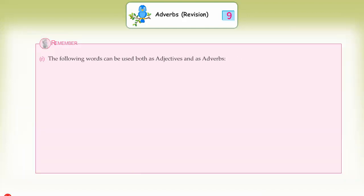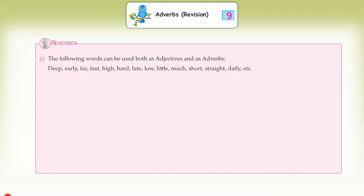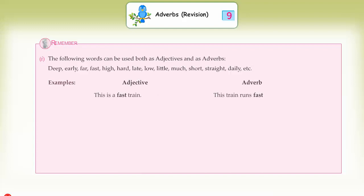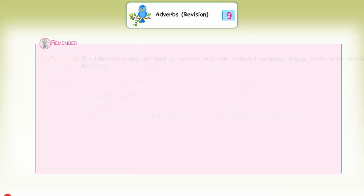Remember: (1) The following words can be used both as adjectives and as adverbs: deep, early, far, fast, high, hard, late, low, little, much, short, straight, daily, etc. Examples: 'This is a fast train' (adjective) / 'This train runs fast' (adverb). 'He did hard work' (adjective) / 'He worked hard' (adverb). 'There isn't much water in the tank' (adjective) / 'He enjoyed the food very much' (adverb).